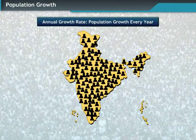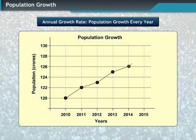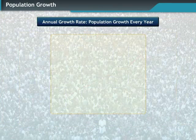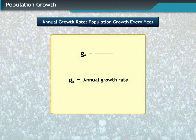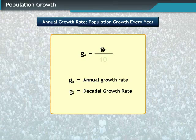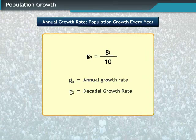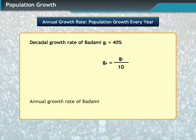The rate at which population grows every year is called the annual growth rate. It can be calculated by dividing the decadal growth by 10. The annual growth rate of Badami village is calculated as 4%.